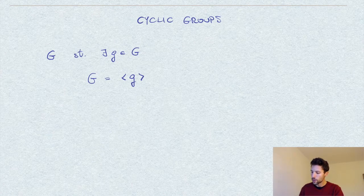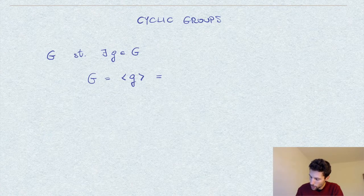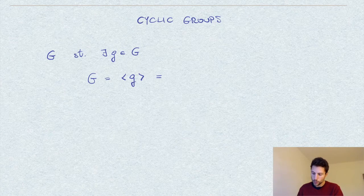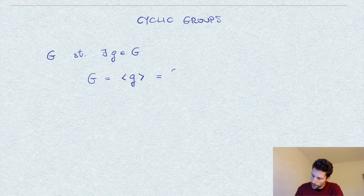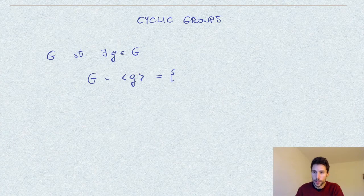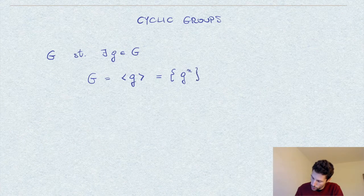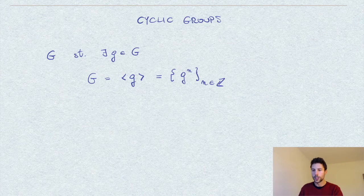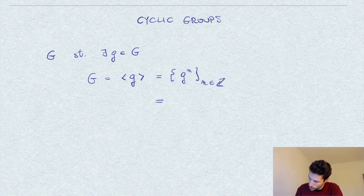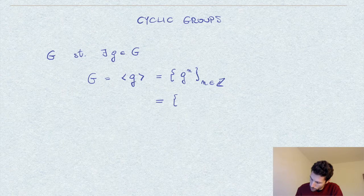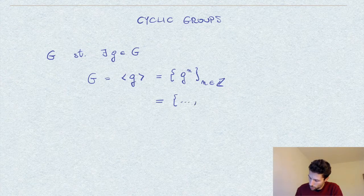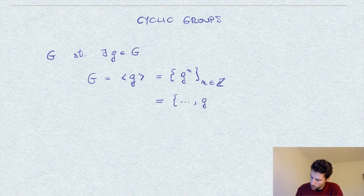And with this notation, I mean, when we use multiplicative notation, so the operation in G is the product, then this means the powers g power n, where n is an integer for all the integers. So this is of course equal to